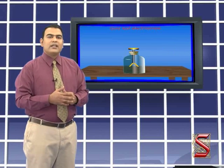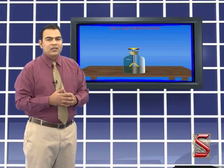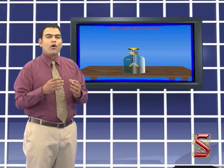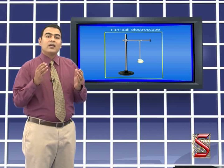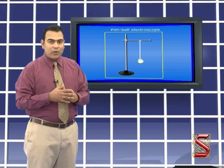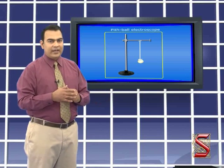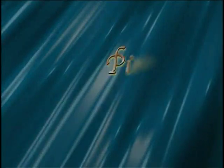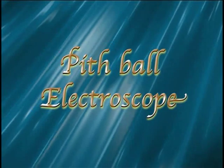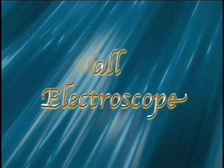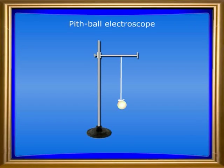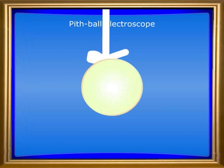As you have already learned, electroscopes are devices which are used to detect the presence of static electricity over a body. You can construct the simplest possible electroscope as shown in the slide: the pith-ball electroscope.